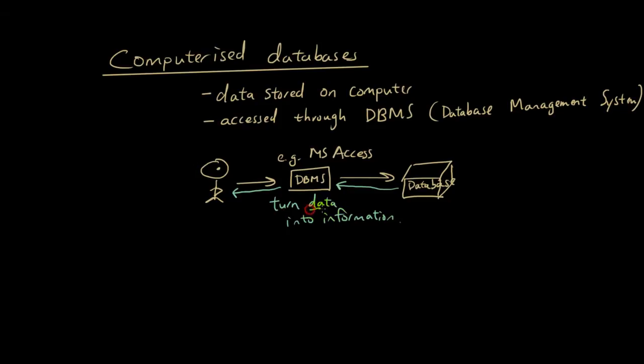So you might say, what's the difference between data and information? Well, data is basically, there's just so many new words. Data is basically a basic fact. And then information is data organized to produce meaning.